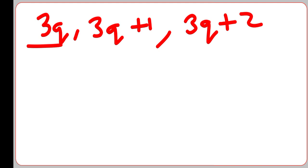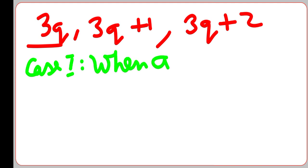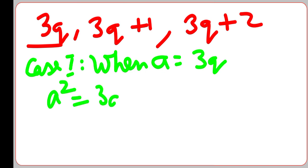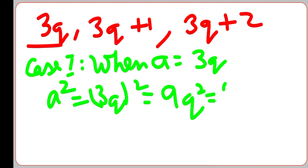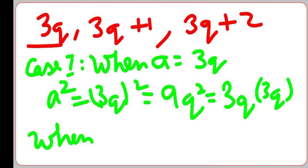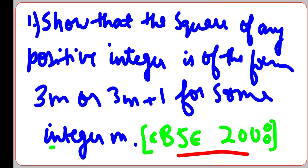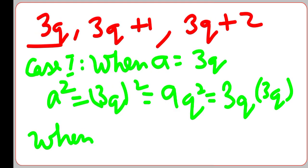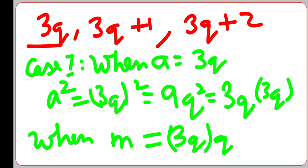Case 1: When A = 3Q. Squaring both sides: A² = (3Q)² = 9Q² = 3(3Q²). So A² = 3M, where M = 3Q².